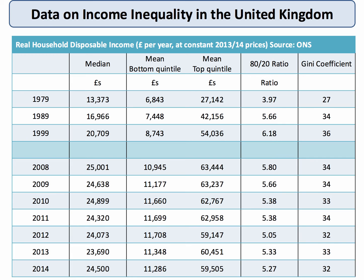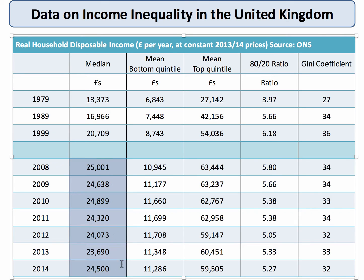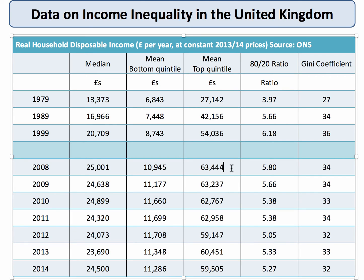Now let's put in the latest data — this is information available up to the end of 2014. Median real disposable income has fallen in the UK since 2008. This has been a tough time for living standards in the UK. The mean income of the bottom quintile rose a little bit from 2008 to 2009 but has been stagnant or falling since. The mean income of the top quintile is now hovering around £60,000 per year. There's actually been a fall in income inequality in the UK since 2008, as measured by the 80-20 ratio and by the Gini coefficient, which has fallen to 0.32.